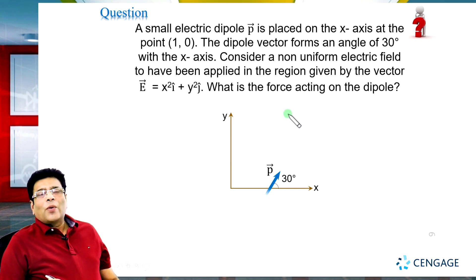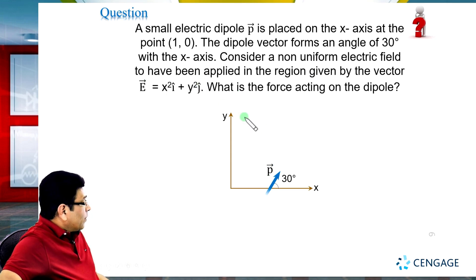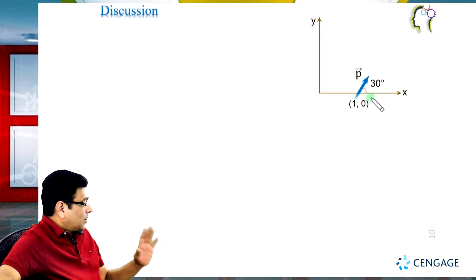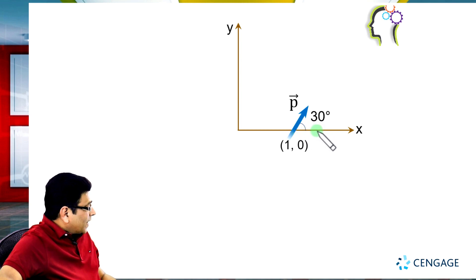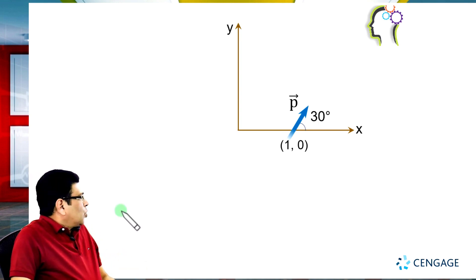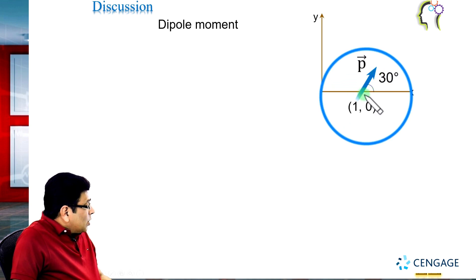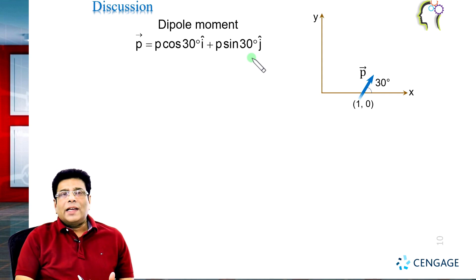We need to calculate the force on the dipole. Let us look at the diagram. The coordinate is (1, 0), and the dipole moment vector is inclined at 30 degrees with the horizontal or x-axis. We can resolve the vector into i-cap and j-cap components. So the dipole moment vector will be equal to p cos 30 i-cap plus p sin 30 j-cap.